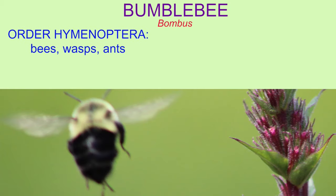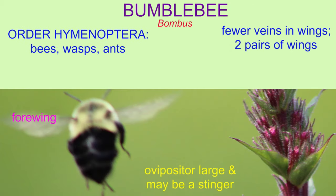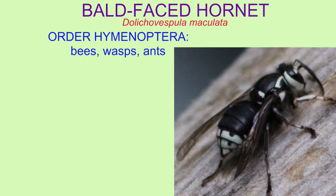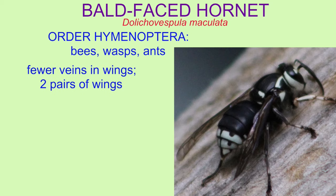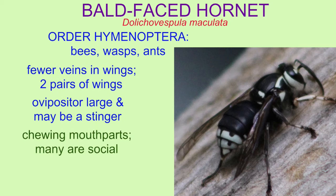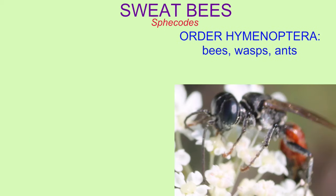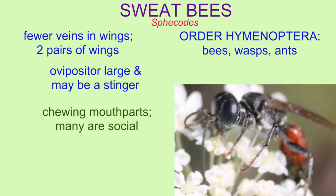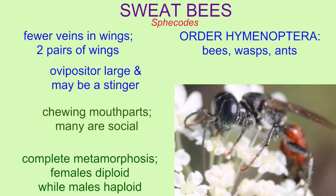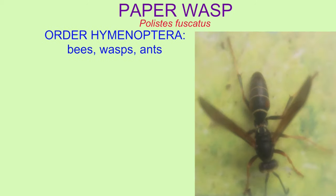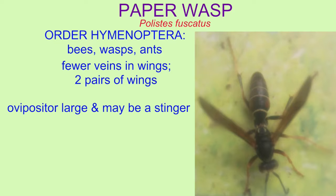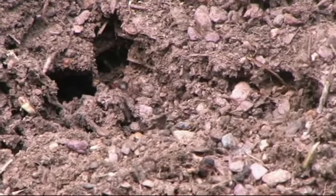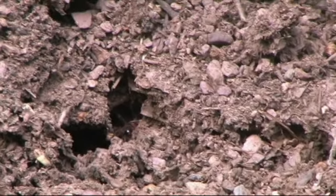The order Hymenoptera includes almost 10% of all known species. It includes wasps, bees, and ants, and there is an incredible diversity of them. However, it also includes sawflies, horntails, and wood wasps. There aren't as many — only about 8,000 of these species — but they were the original members of the order Hymenoptera, and about 100 million years passed before the evolution of the first wasp in the sense that we would recognize.